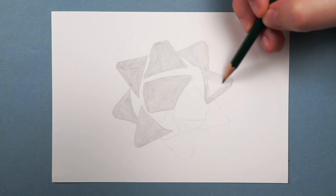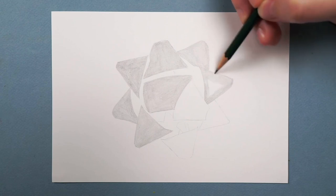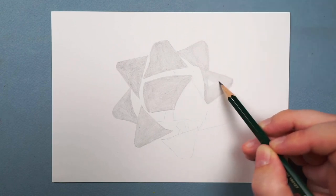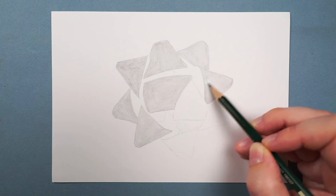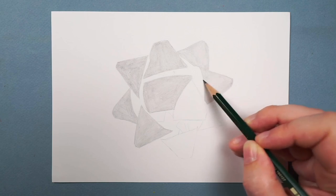I'm also working in circular motions, so rather than going back and forth with the pencil, I'm working in these large circular or almost oval motions, which helps the pencil go down as smooth as possible.